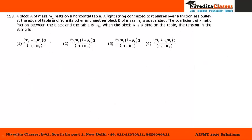Moving to question 158: a block A of mass M1 rests on a horizontal table. A light string connected to it passes over a frictionless pulley at the edge of the table, and from its other end, block B of mass M2 is suspended. The coefficient of kinetic friction between block A and the table is mu-k. When block A is sliding on the table, we have to find the tension in the string. Let us draw the picture: M1 is on the horizontal surface, connected via string over a pulley to hanging mass M2. The tension in the string will be the same throughout.